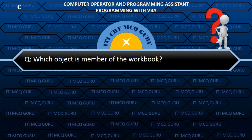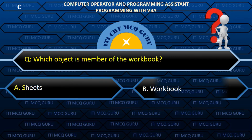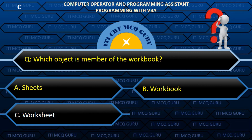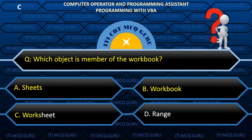Which object is a member of the workbook? Answer: C. Worksheet.